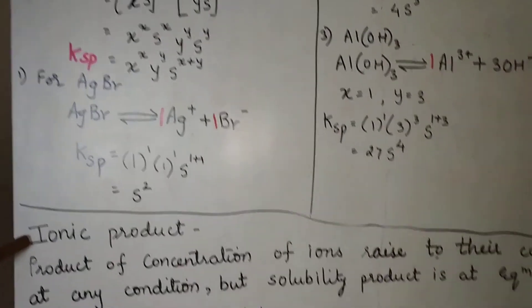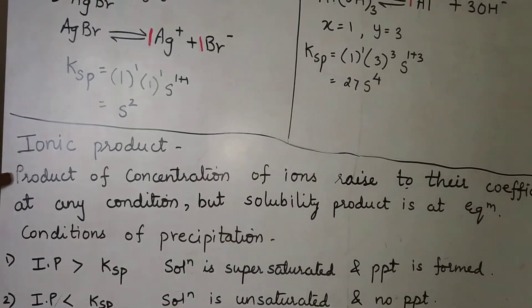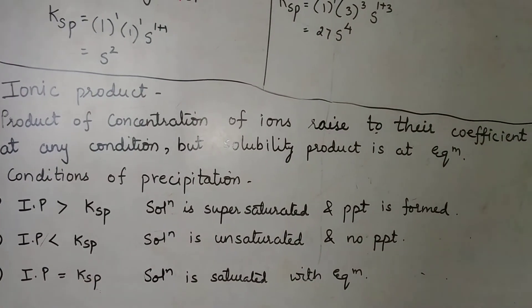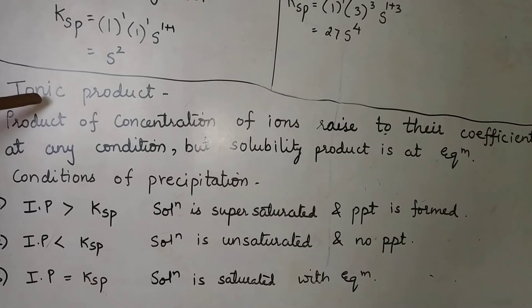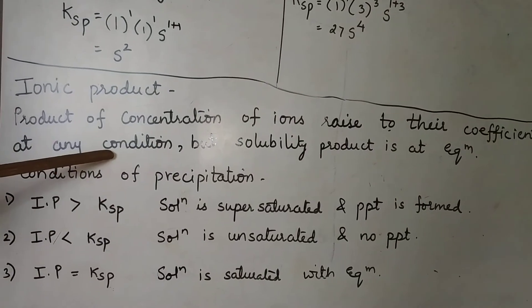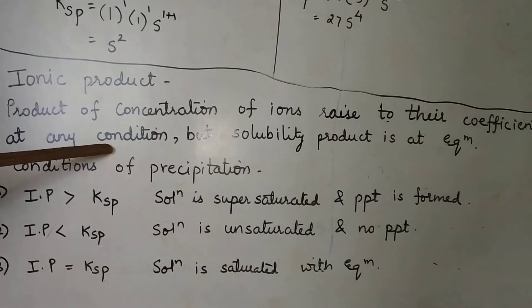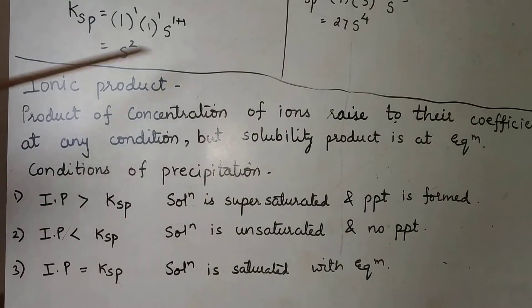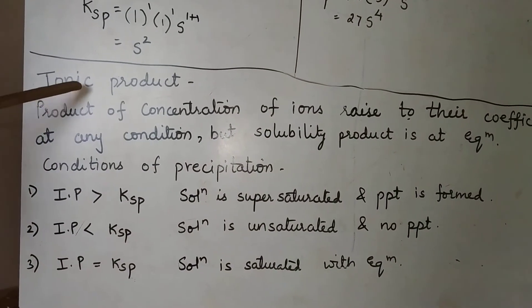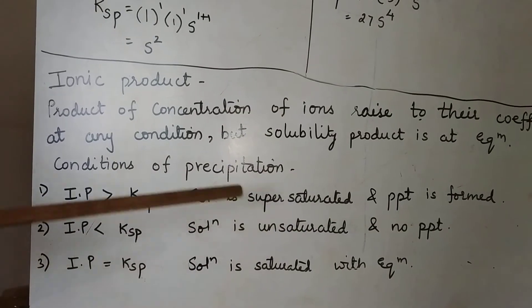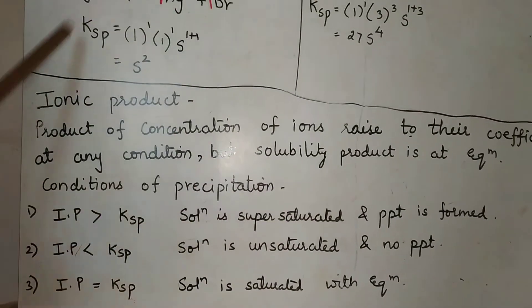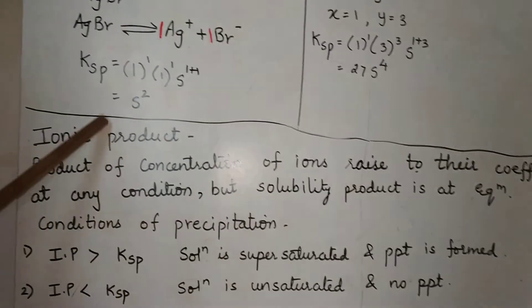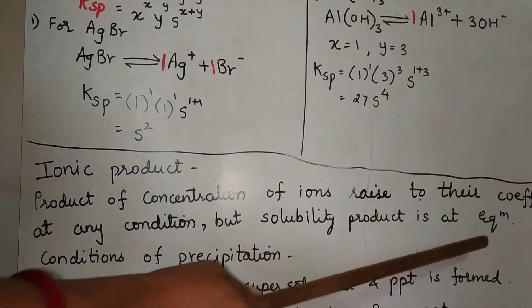Now come to the next point: ionic product. What is ionic product? It is the product of the concentration of ions raised to their coefficient terms, calculated at any condition — initial condition, after 5 minutes, after 10 minutes, after 20 minutes. That product of concentration of ions at any condition becomes the ionic product. Solubility product is the same concept but given specifically at equilibrium.